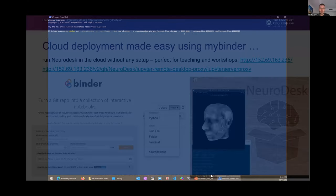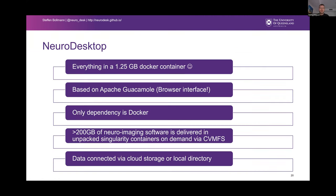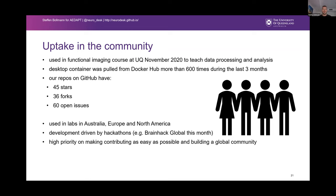To summarize: everything is in a 1.25 gigabyte Docker container based on Apache Guacamole, which gives us the browser interface. The only dependency needed is Docker, but we're trying to bring everything into the cloud. We currently have more than 200 gigabytes of neuroimaging software delivered in sub-Singularity containers via CVMFS, and data is connected via cloud storage or local directory shares so you can bring in your data easily.